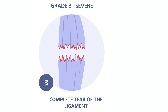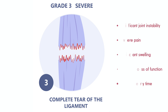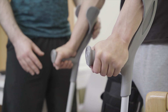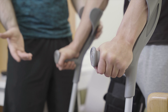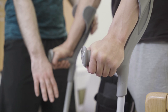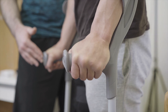Grade 3 injuries involve a complete tear or rupture of the ligament, and tend to result in significant joint instability. Pain, swelling, and loss of function are usually severe, and the athlete may be unable to bear weight on the affected joint. This type of injury typically necessitates a lengthy recovery period, and may require surgical intervention, followed by an intensive rehabilitation program.